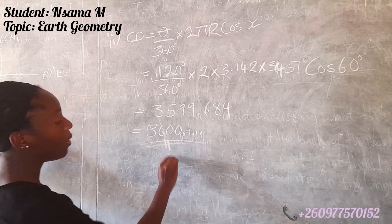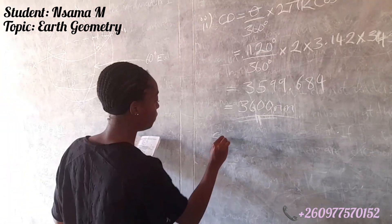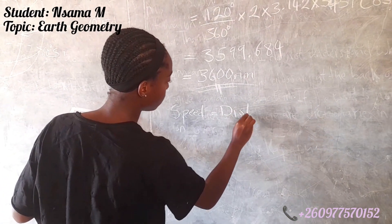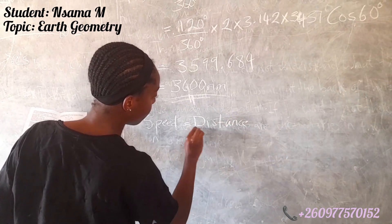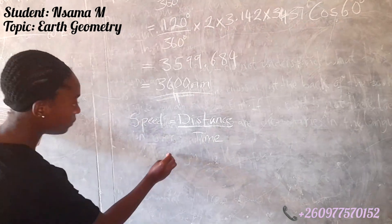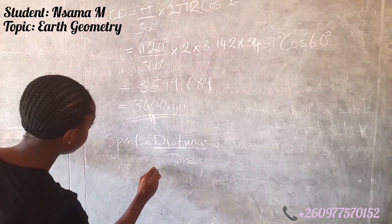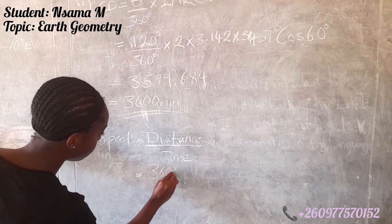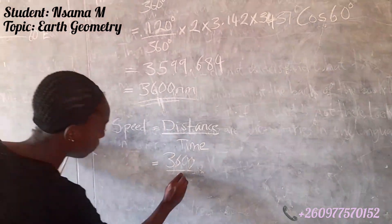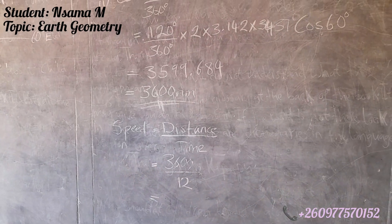This is our answer. So we are now going to find our speed. The formula for speed: speed equals distance over time. Our distance is the one we found here — 3600 — over 12 hours, as stated in the question, which gives us 300.